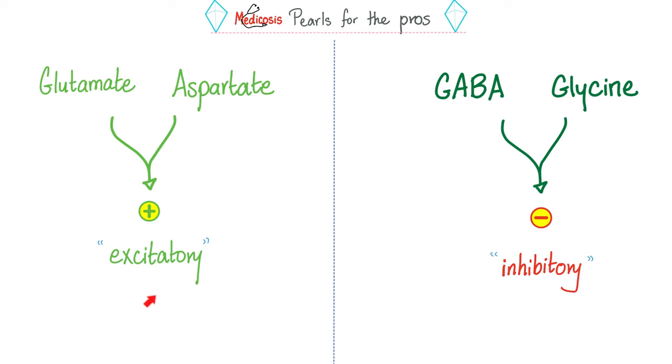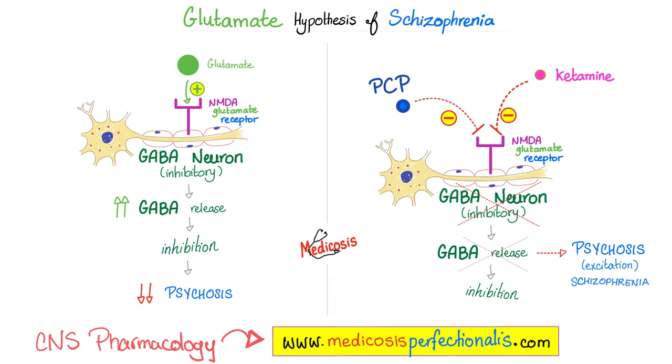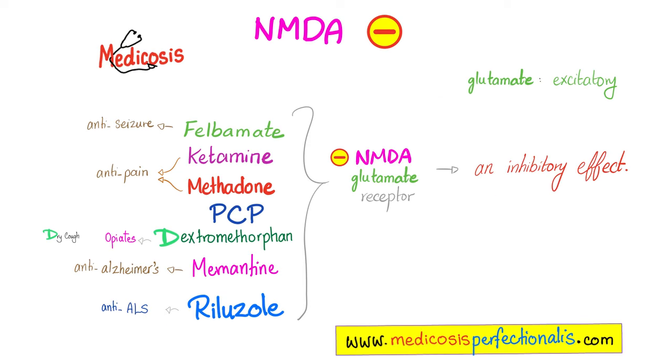Aspartate and glutamate are excitatory neurotransmitters. But GABA and glycine are inhibitory. Glutamate is excitatory. Glutamate has NMDA receptor and AMPA receptor. Glutamate receptor is part of glutamate, so it's excitatory. But what if you block the receptor? You get an inhibitory effect. What are the medications that block that receptor? There are many, including felbamate, calamine, methadone, PCP, dextromethorphan, memantine, and riluzole.